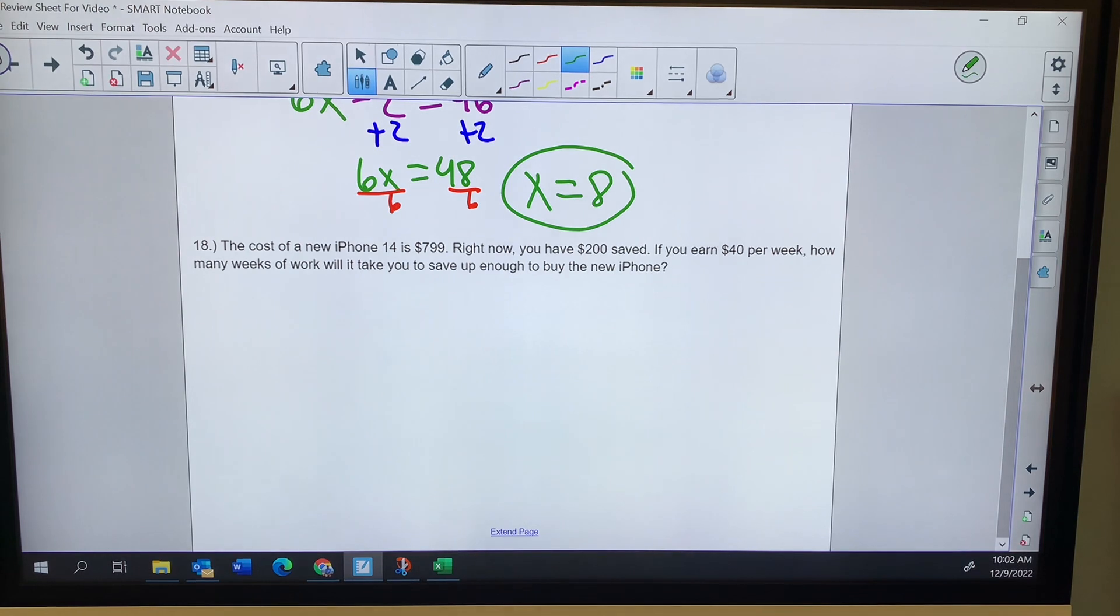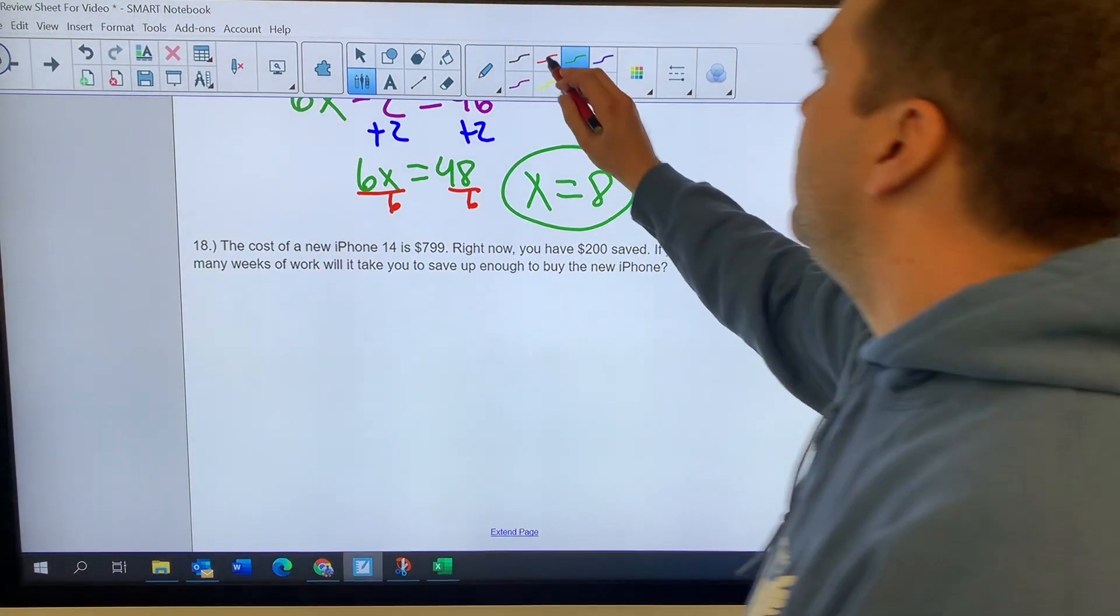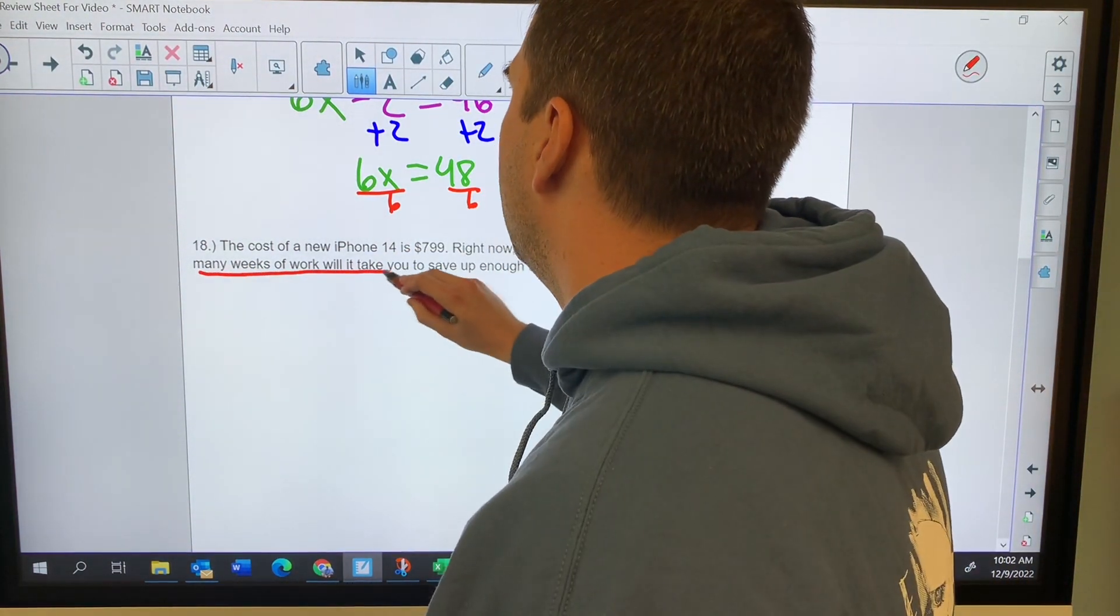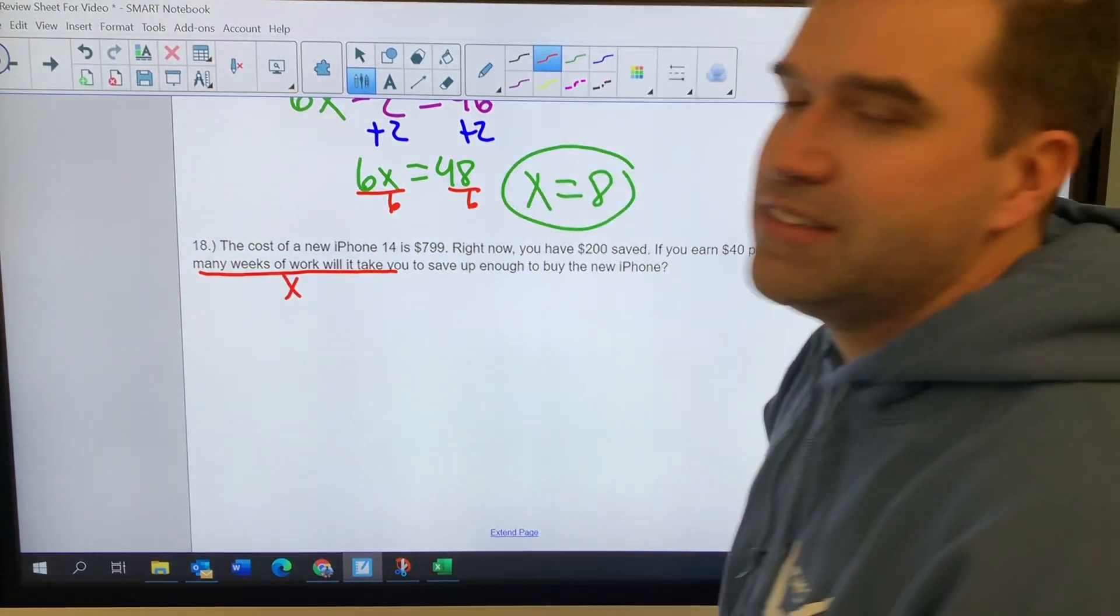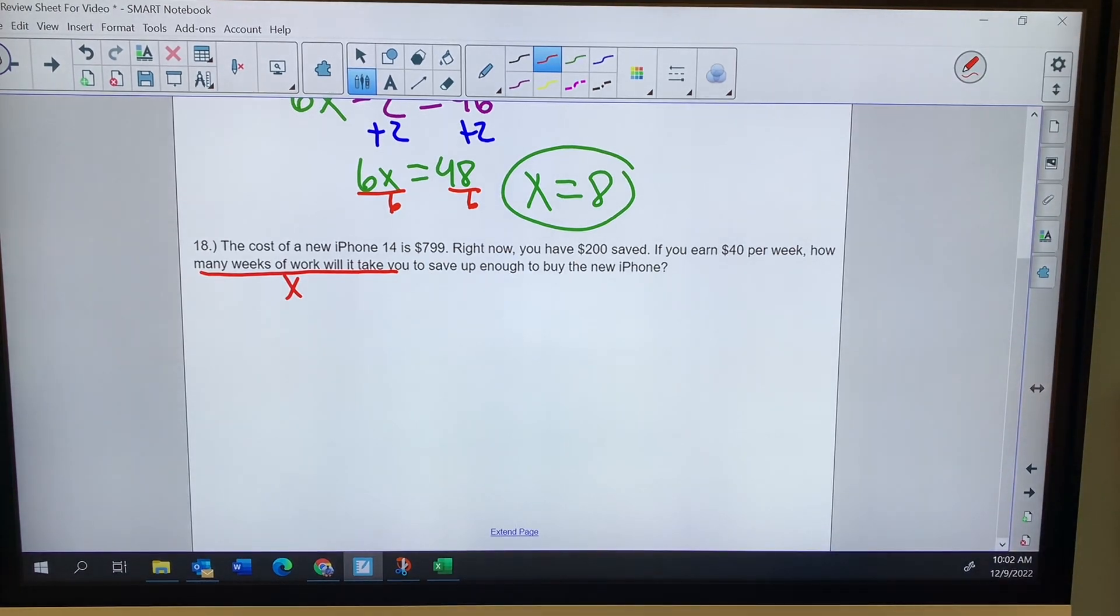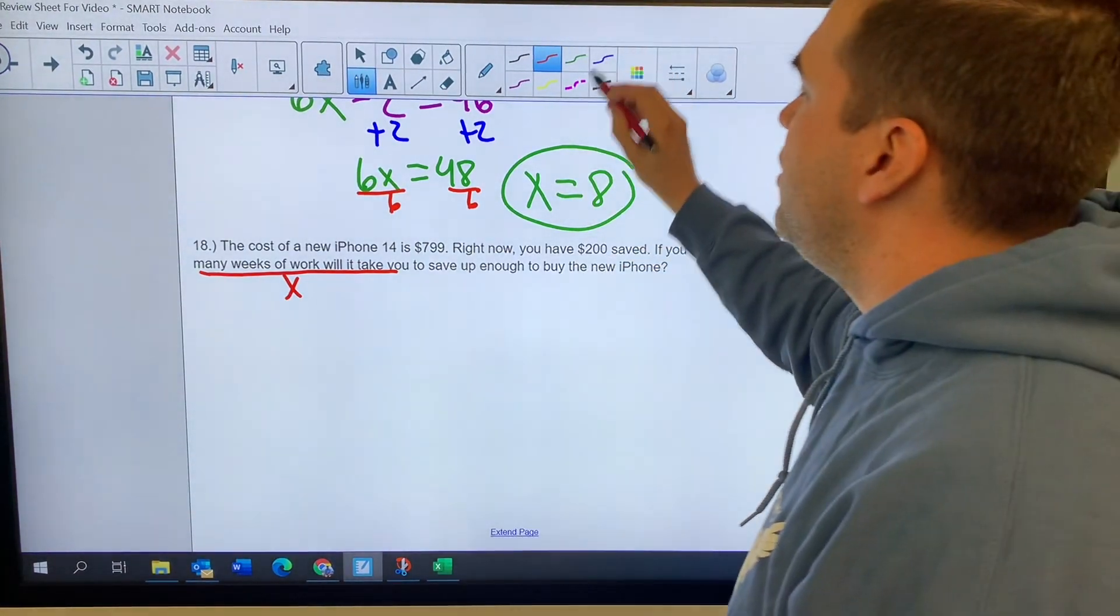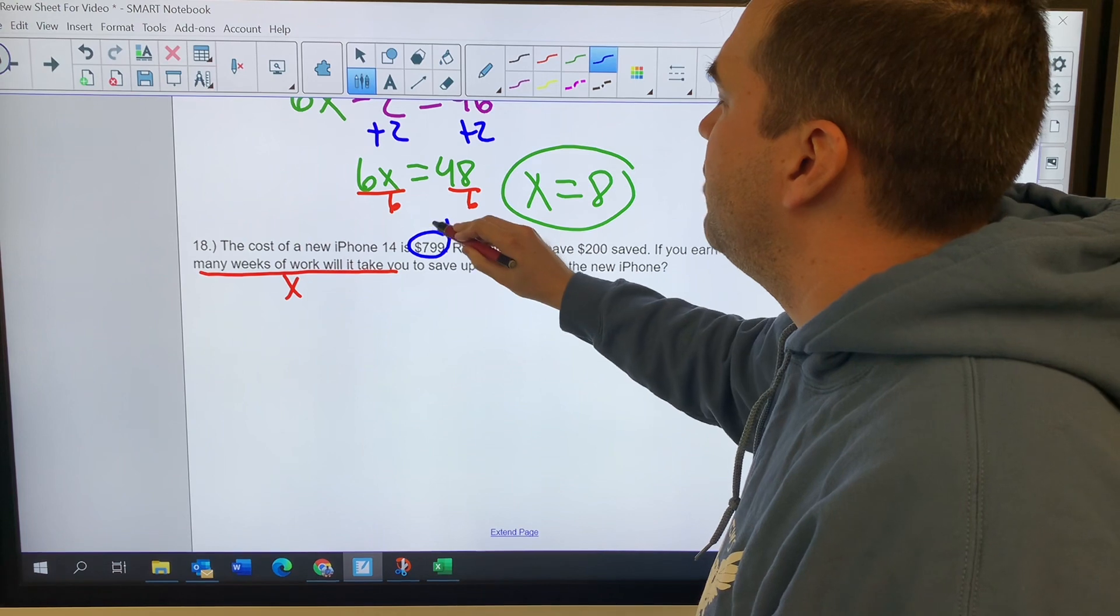Number 18, cost of a new iPhone is $799. I've already got $200, earning $40 per week. How many weeks? Right there. How many weeks of work will it take? That's going to be x. That's what we're trying to find. I know I want to get to $799. That's my total.